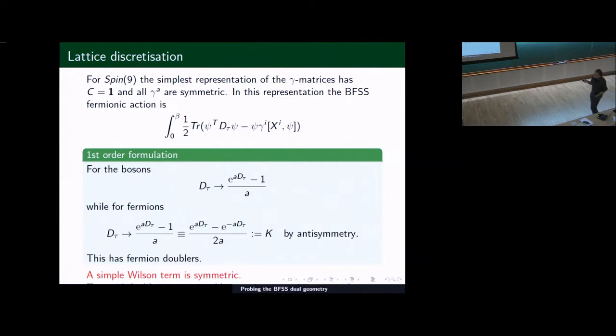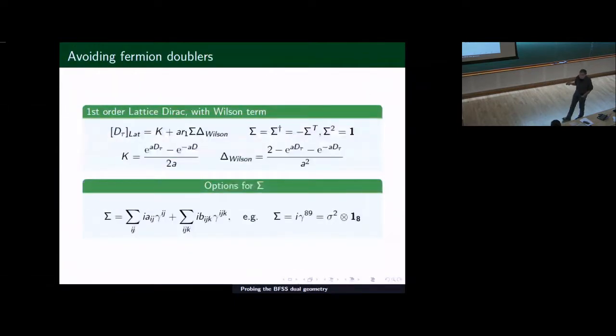The fermions, as you see here, this is an anti-symmetric object. These are Majorana. I've gone to a particular representation of spin 9, in which the charge conjugation is the identity, and all the gamma matrices are symmetric. So the fermion is an anti-symmetric object. If I put in this for my derivative, only the anti-symmetric part of it survives. However, this formulation has doublers. One might want to try and eliminate the doublers by a simple Wilson prescription. But the simple Wilson term proportional to the identity matrix here is going to drop out. It's symmetric. So one needs to add something anti-symmetric as part of the Wilson prescription.